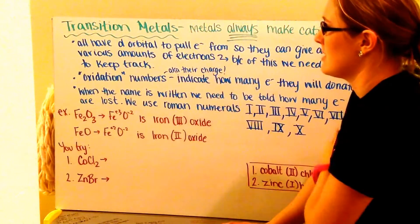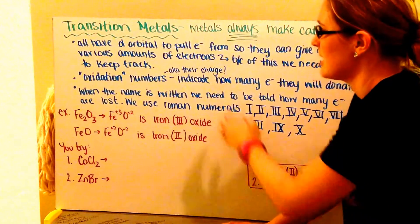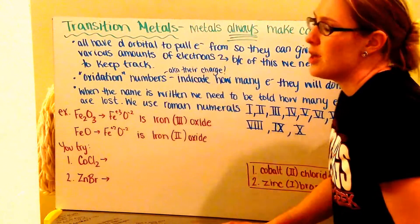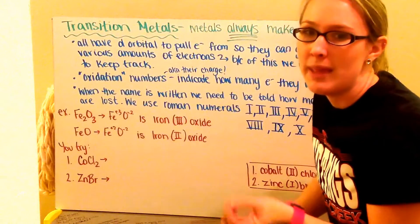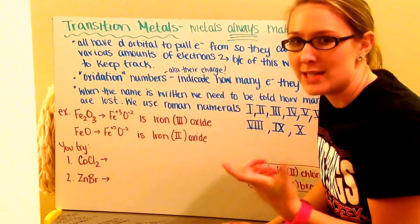So to keep track of these numbers, we use oxidation numbers, and that's just the charge that's shown. So you've already seen them before, it's when you have potassium plus 1, calcium plus 2. That plus 1 and plus 2 are their oxidation numbers.